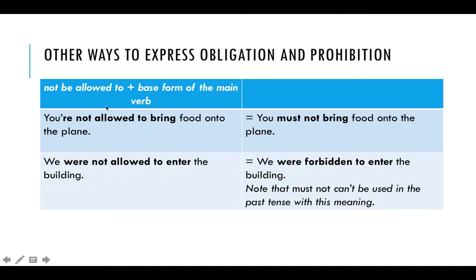Then we have 'not be allowed to' plus the base form of a main verb. 'You're not allowed to bring food onto the plane' — this is like 'must not': 'You must not bring food onto the plane.' Here is the past tense: 'We were not allowed to enter the building.' And here again, 'must not' in the past becomes something different.